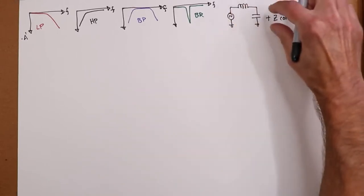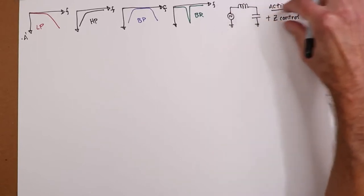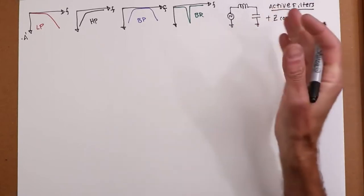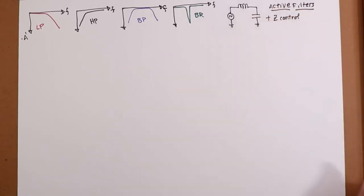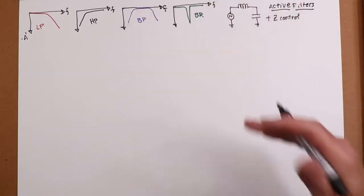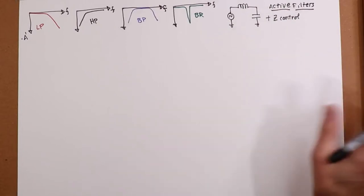Whereas if we had passives, what we find is, if I had another inductor capacitor out here, that would load the first stage. And there would be this interaction, which with the active filters, we don't really have that. So it's a lot easier to design these things. And we can have a nice high input impedance and a low output impedance.